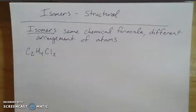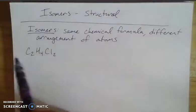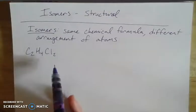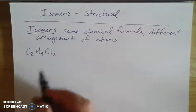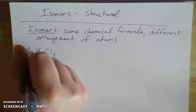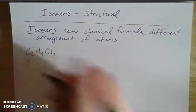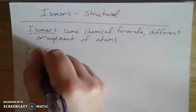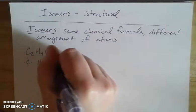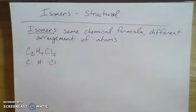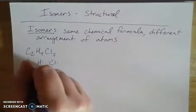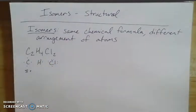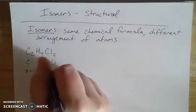Let's take C₂H₄Cl₂. To think about the overall structure we need to count the total valence electrons. Carbon has 4 valence electrons, hydrogen has 1, and chlorine has 7 because it's in the halogens column — column 17 or 7A. So two carbons give 8, four hydrogens give 4, and two chlorines give 14.